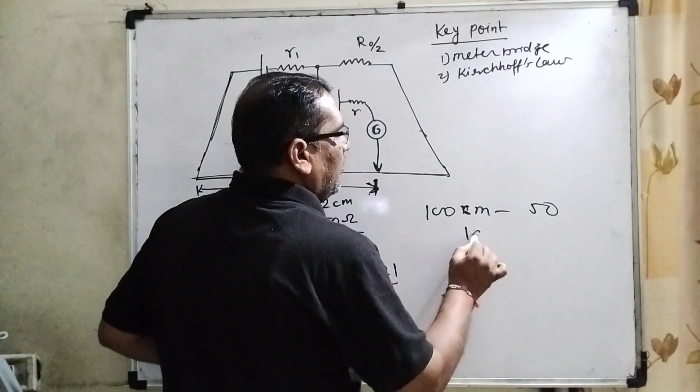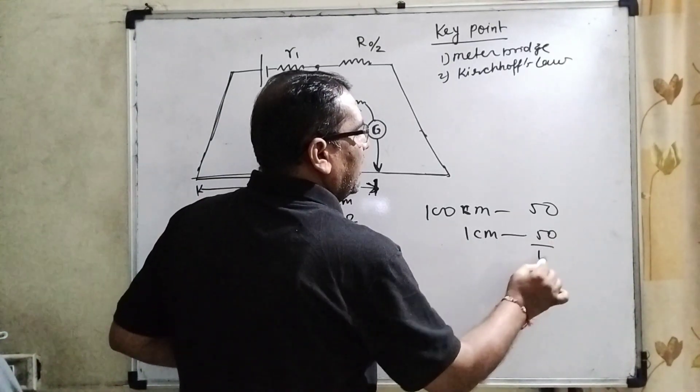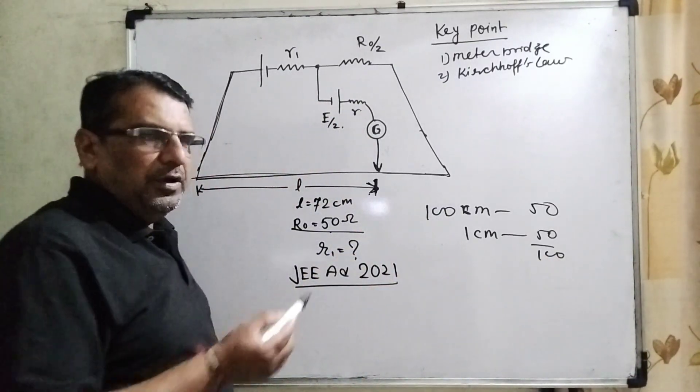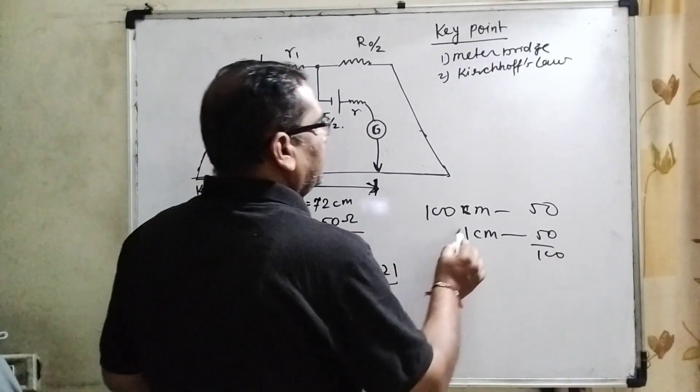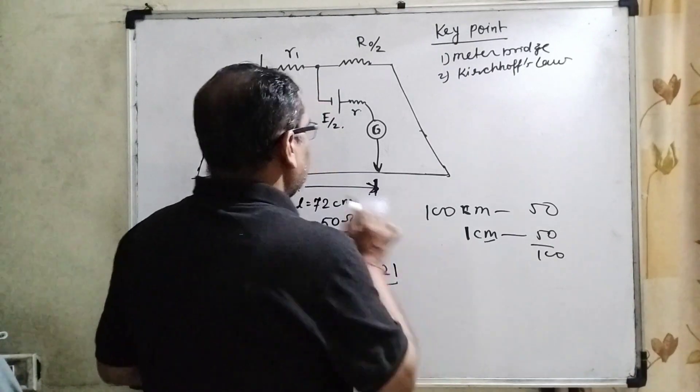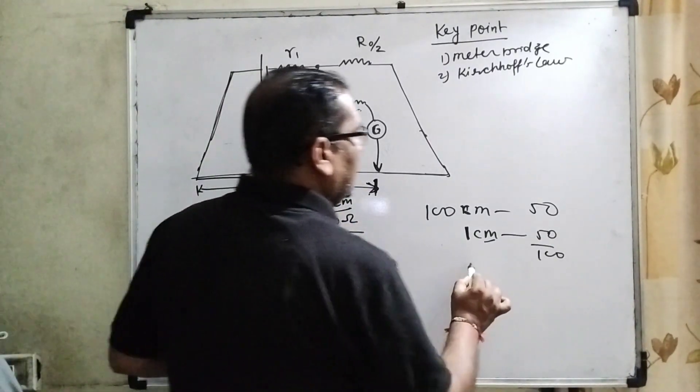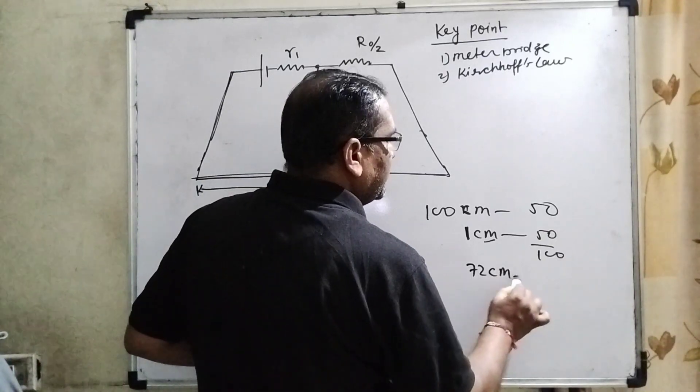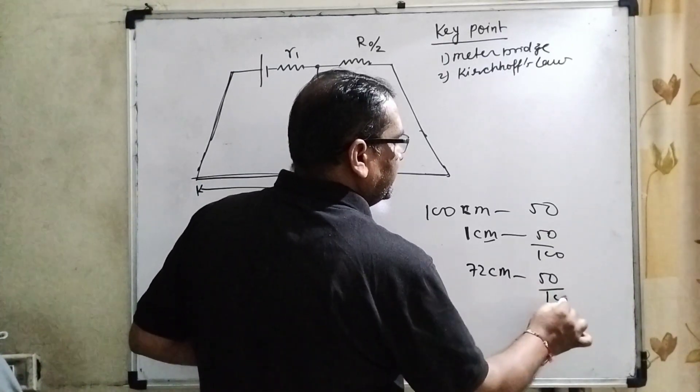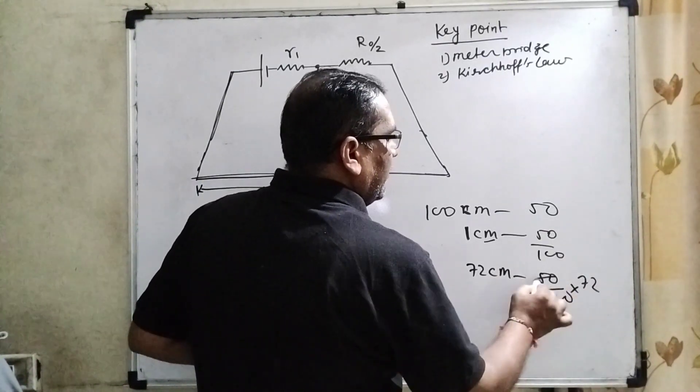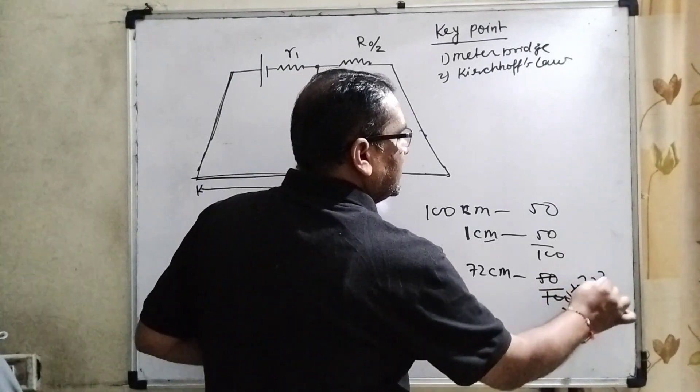Then for 1 centimeter, it's equal to 50 by 100. Using unitary method, for 72 centimeters, the resistance is 50 over 100 times 72, which equals 36 ohms.